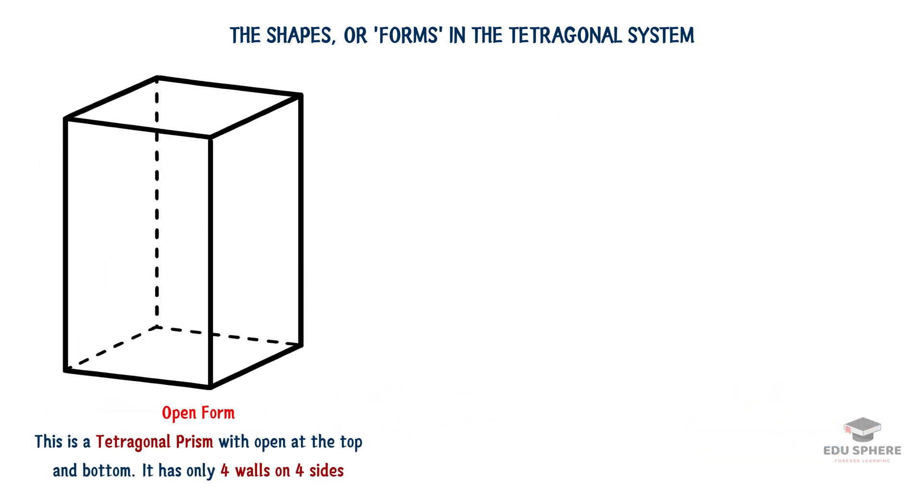In the tetragonal crystal system, many shapes start out like this. This is a prism. Think of it as the 4 walls of a box but with no top and no bottom. You can see right through it. Because it can't enclose space by itself, it's called an open form.